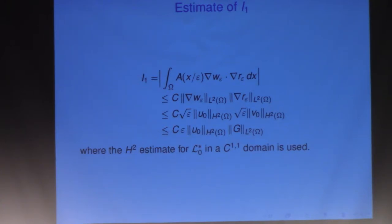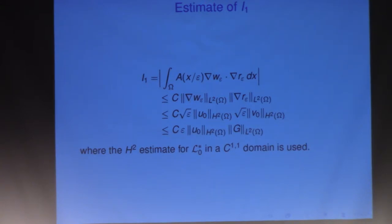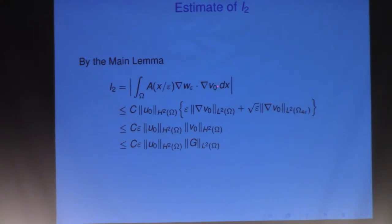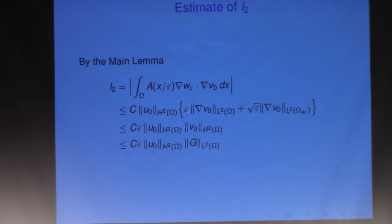We need some smoothness condition on omega because we need an H2 estimate for L_0^* — C^{1,1} will suffice. For the second term: the integral of A times the gradient of W_ε times the gradient of V_ε. Here we use the main lemma, treating V0 as a test function — V0 is in H^1_0, so we can. You generate two terms: the first gives power epsilon, the second has square root of epsilon but is integrated on the boundary layer. Increasing the derivative to 2 gives another epsilon from the boundary layer estimate, getting back to power one.